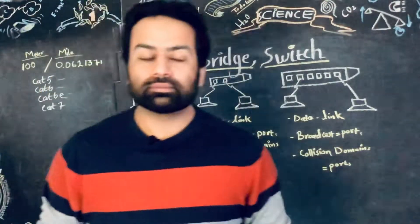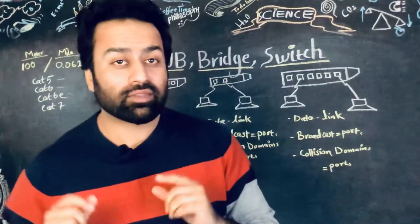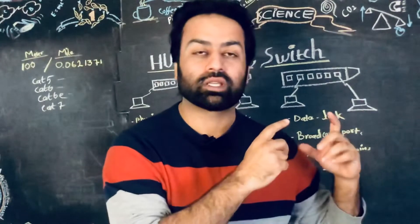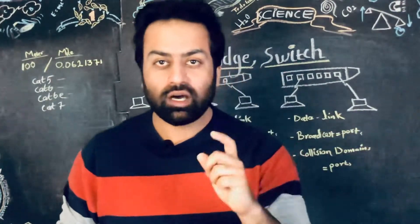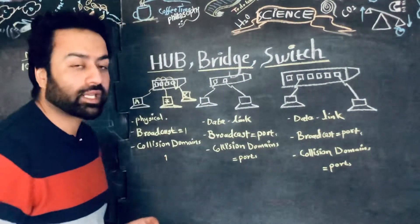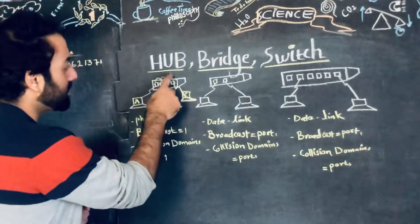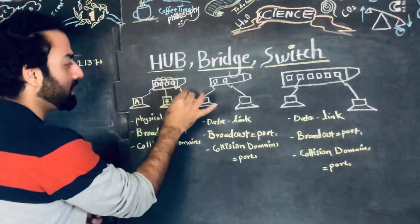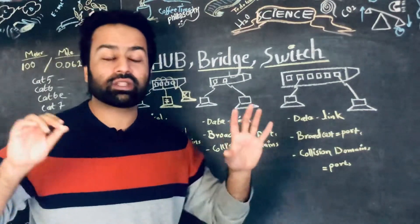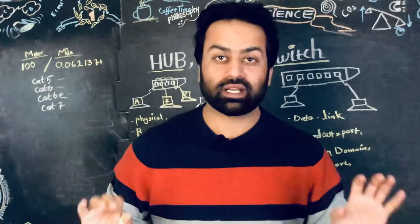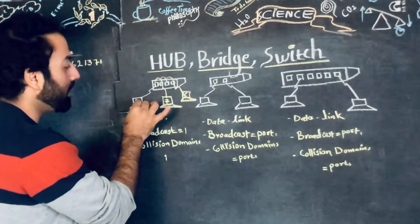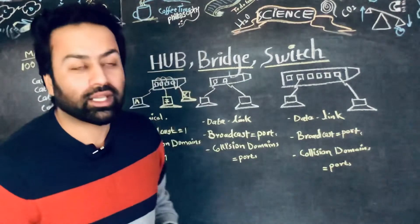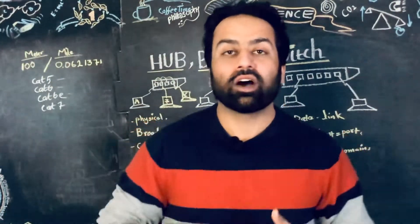Broadcast domain equals one, and collision domain also equals one. This is a very important clue to distinguish between hub, switch, and bridge. The hub itself creates collisions because if computer A wants to send a request to computer C, all other computers must wait. If computer B also wants to send a request at the same time, there is a collision.